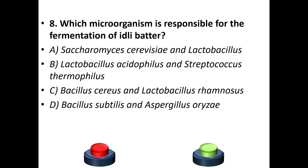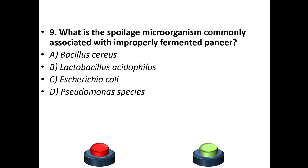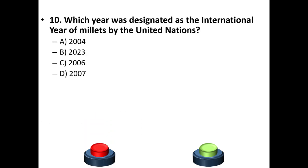Options: B: Lactobacillus acidophilus and Streptococcus thermophilus. C: Bacillus cereus and Lactobacillus rhamnosus. D: Bacillus subtilis and Aspergillus oryzae. The answer is A — Saccharomyces cerevisiae and Lactobacillus. Ninth question: what spoilage microorganism is commonly associated with improperly fermented paneer? A: Bacillus cereus. B: Lactobacillus acidophilus. C: Escherichia coli. D: Pseudomonas species. Answer: A — Bacillus cereus.